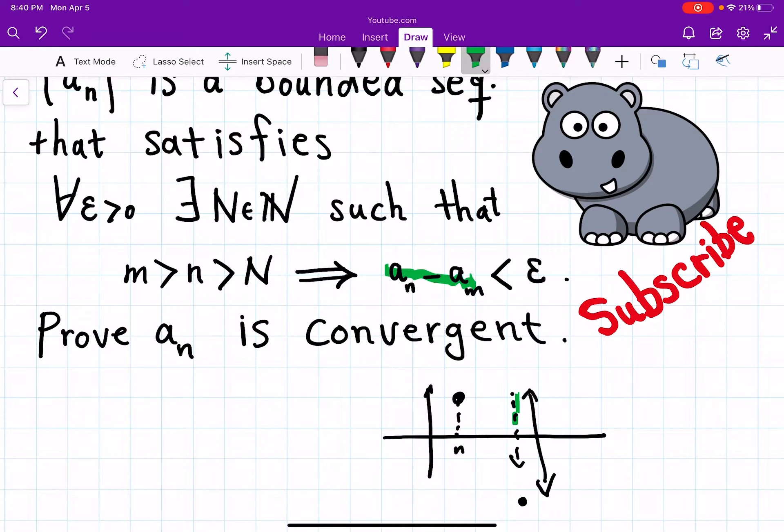However, the surprising part is that there is no control on how far it can jump. So also the aₘ could occur anywhere above here because then aₙ minus aₘ would be negative and would be less than epsilon anyway.